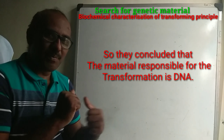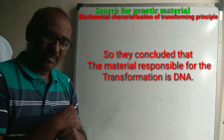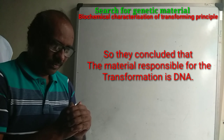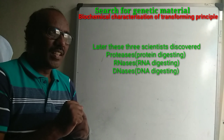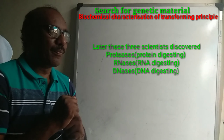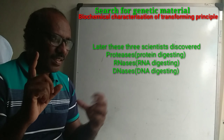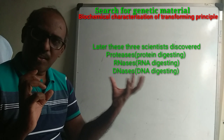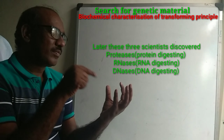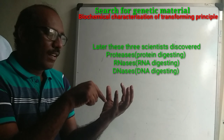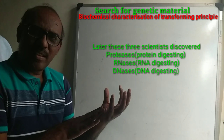What does this mean? What is responsible for transformation? When they added a protein digesting enzyme to the heat-killed S strain material and then combined it with R strain, it was found that R strain still gets converted into S strain. They had been digested — the proteins were digested.